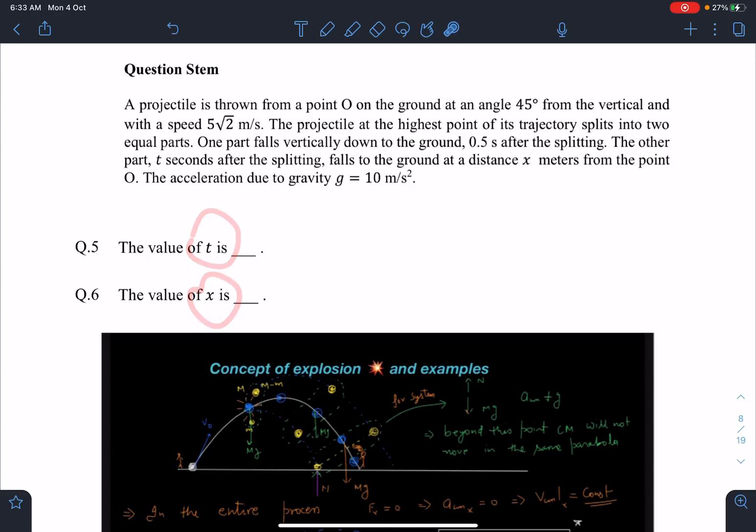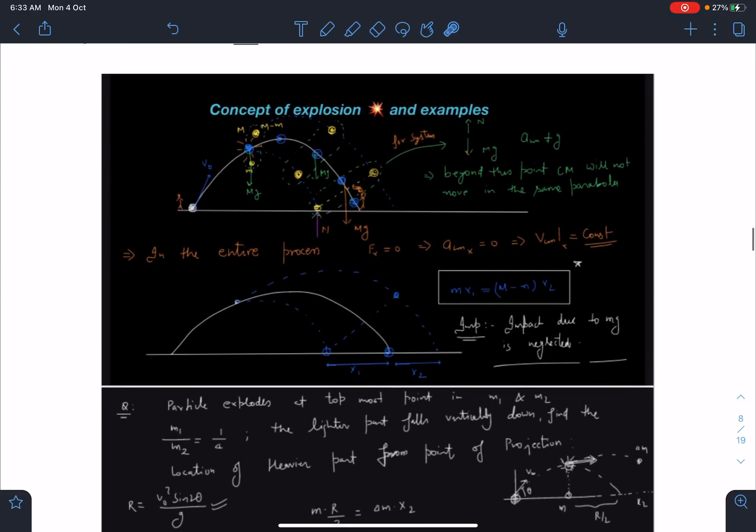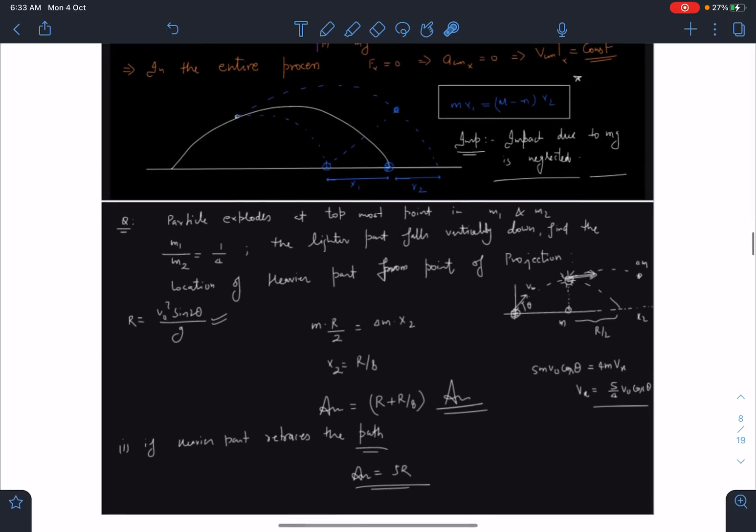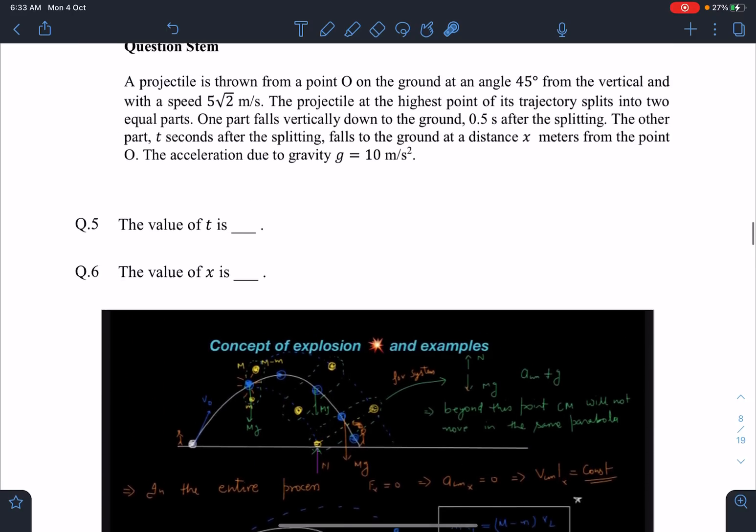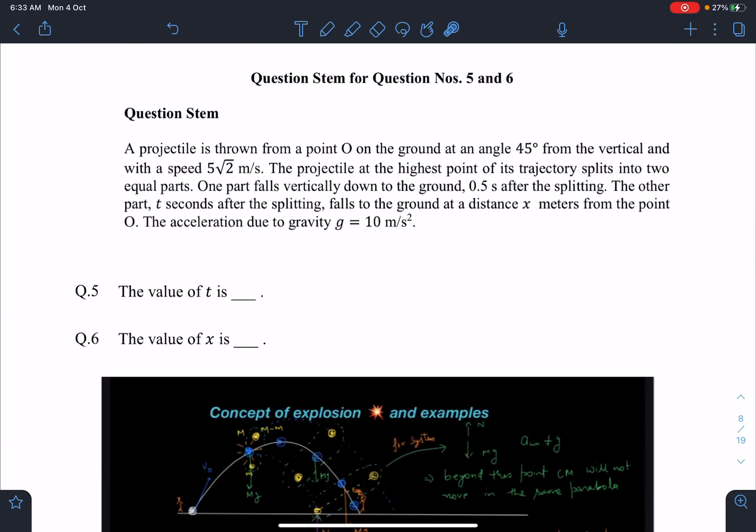One part was falling vertically down after splitting, and then time and x they are asking. To my surprise, almost the same question I have discussed in the class - concept of explosion. You can see here we are also finding that the lighter part falls vertically down and find the location of heavier part from the point of projection. This is what they are asking also from point O. Though it is on the easier side, having such similarity is literally giving me goosebumps.